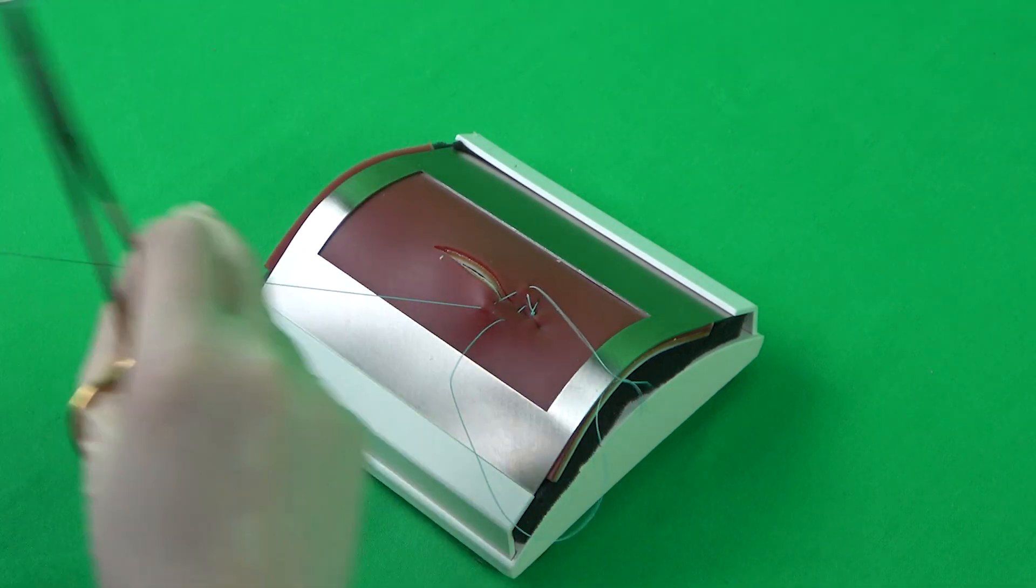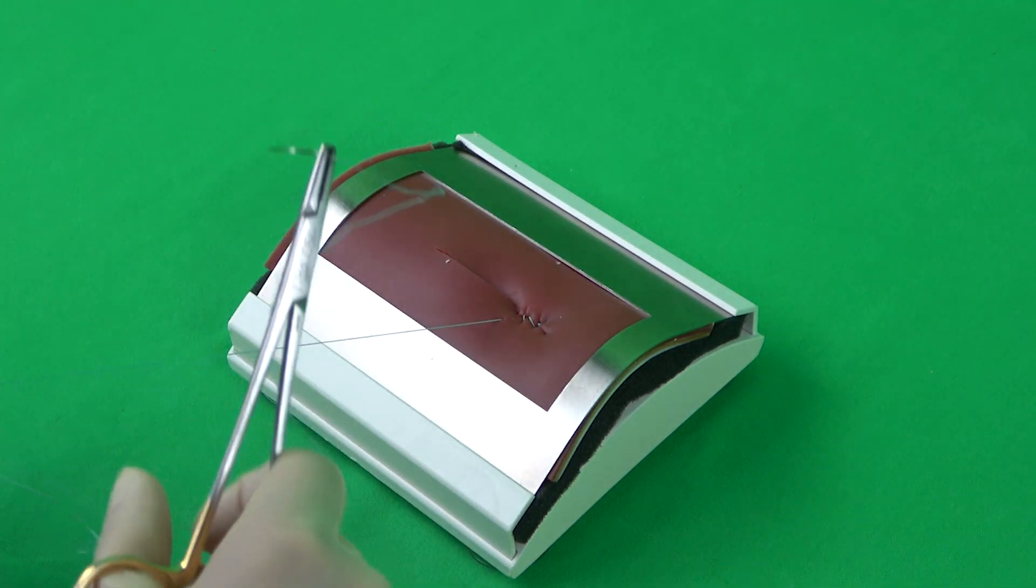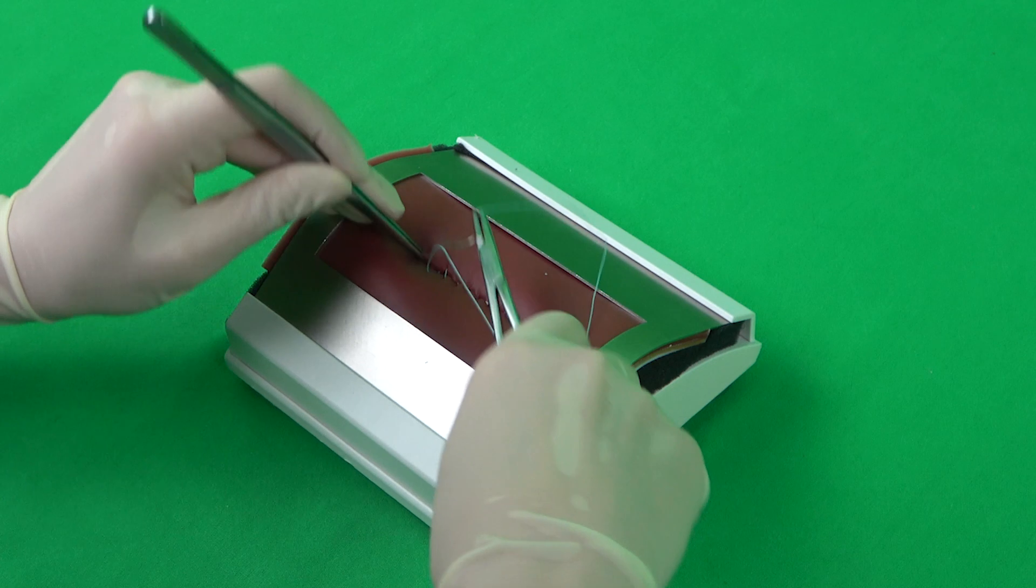After each stitch, the tissue is compressed carefully without endangering fingers or with the help of a swab. Ideally, this provides constant tension of the thread, creating a good wound closure.